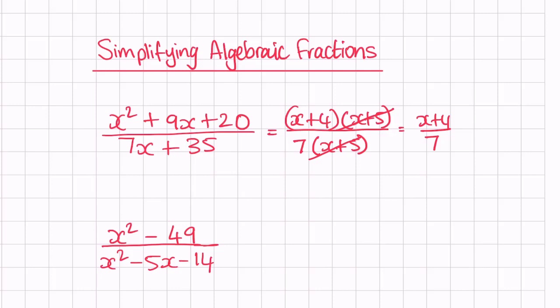Let's have a look at the second example. We have x squared minus 49. We can see 49 is a square number, so we have a difference of two squares. 49 can be written as 7 squared, so x squared minus 49 can be written as x plus 7 multiplied by x minus 7.